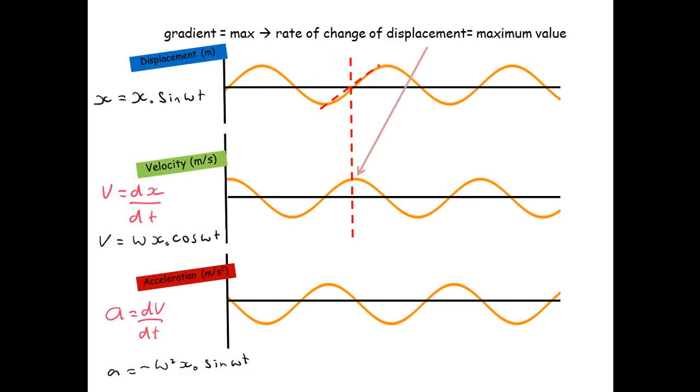Let's have a look at another point. So here our gradient for displacement is at a maximum. So the rate of change of displacement is also a maximum. And you can see that we are at the very peak of the velocity graph.